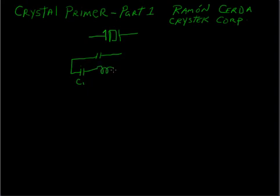Motional inductance, L1, motional resistance, R1, and the shunt capacitance is C0.